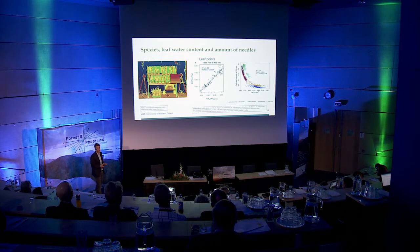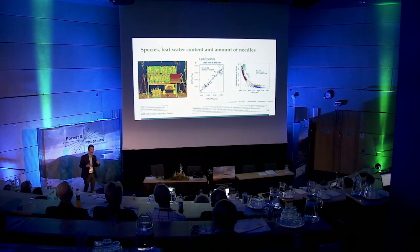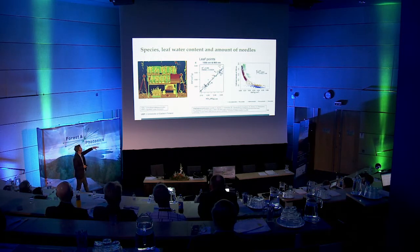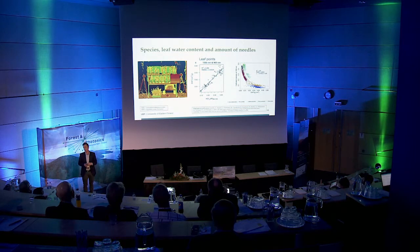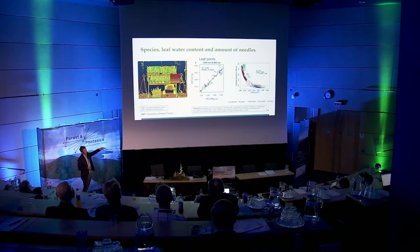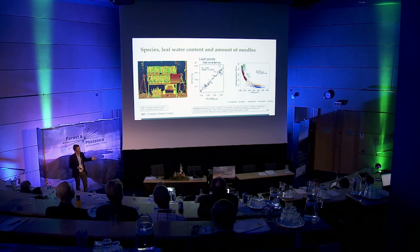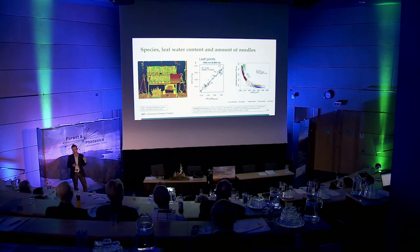In our studies, for example, we have been able to explain most of the variation in equivalent leaf water thickness — basically how much water is in the needles or leaves — using multispectral terrestrial laser scanning in really controlled laboratory conditions. And actually, a little bit by accident, we also detected that in these conditions it was pretty straightforward to separate five tree species from the needles or from the leaves. Of course, this kind of technique requires point cloud classification so you know which returns are coming from the needles or leaves.